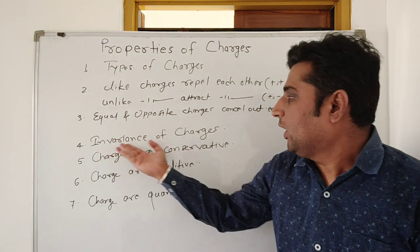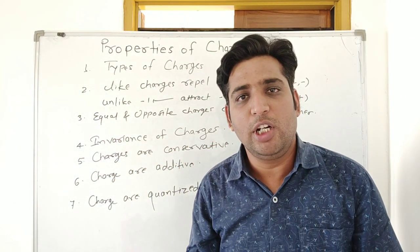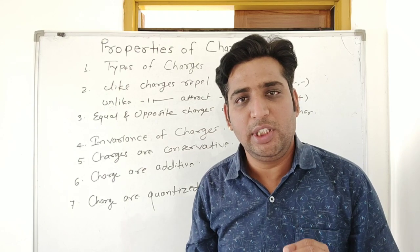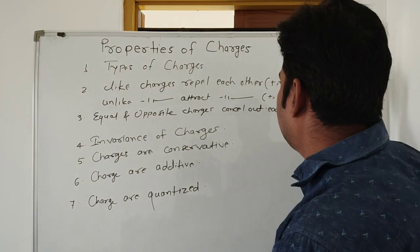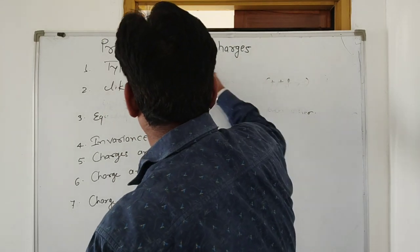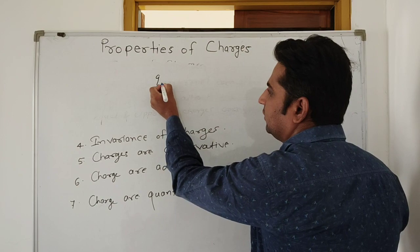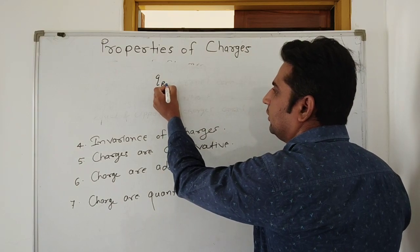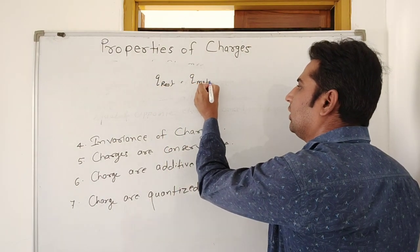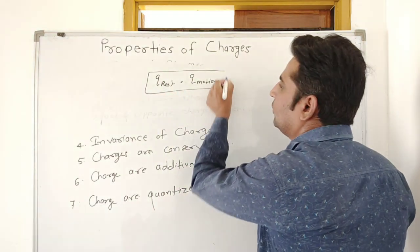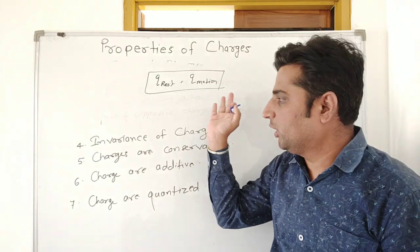Fourth is invariance of charge. It means the value of charge does not depend on the speed of the charge. So we can say that Q at rest is equal to Q in motion.